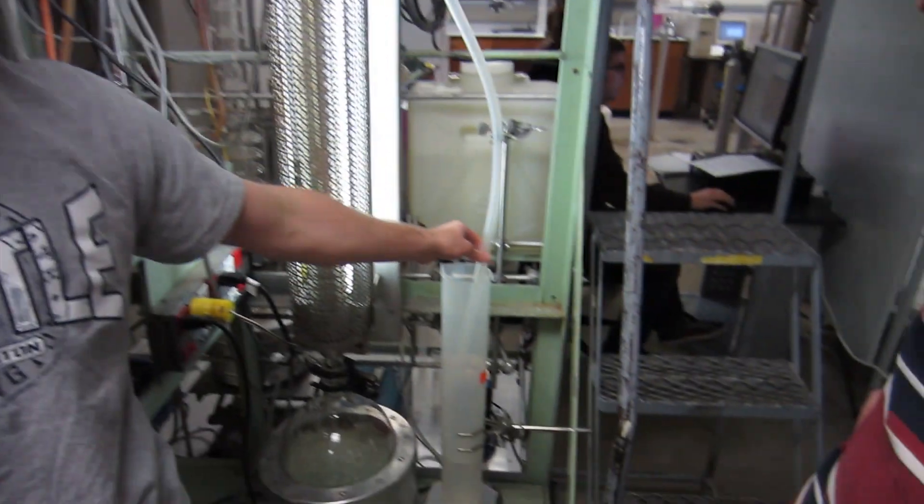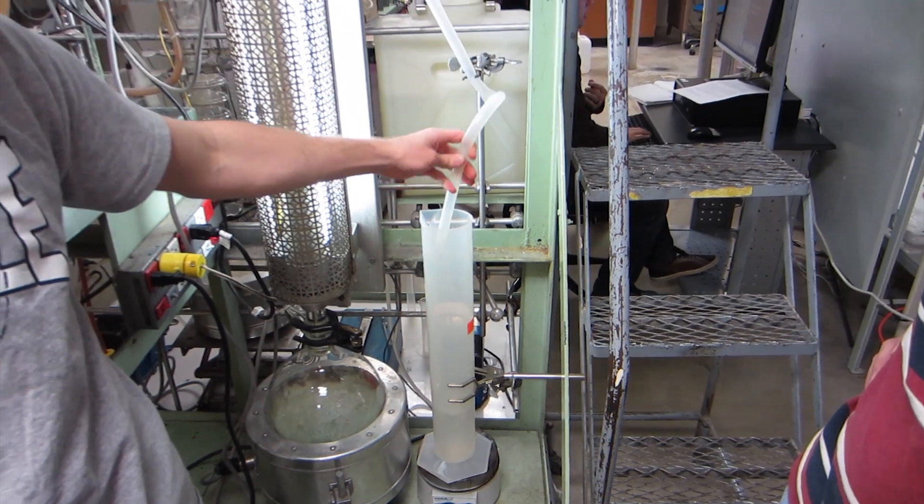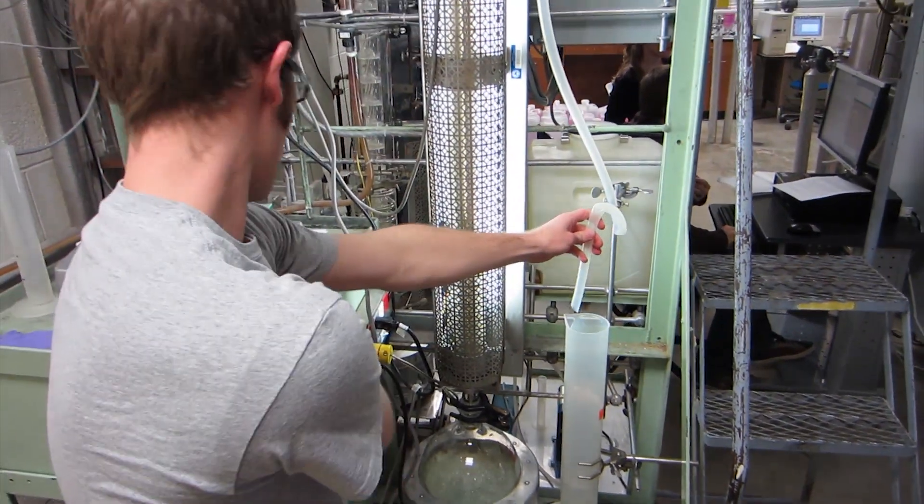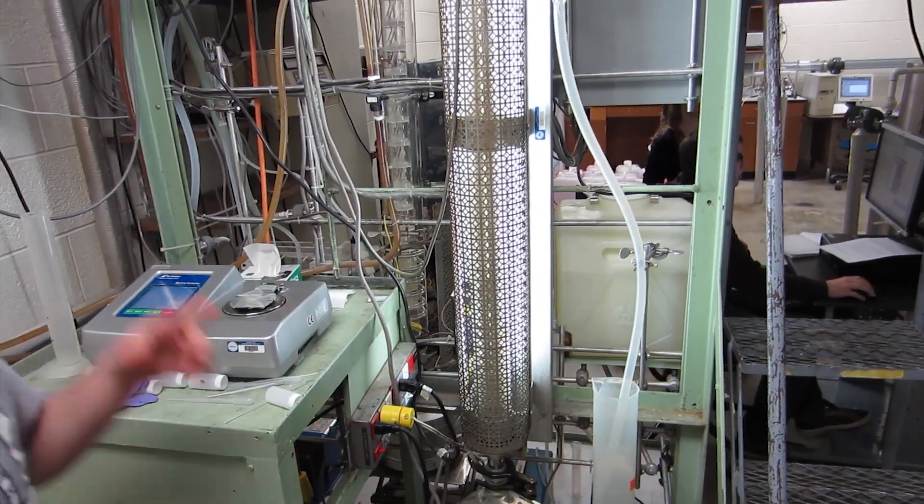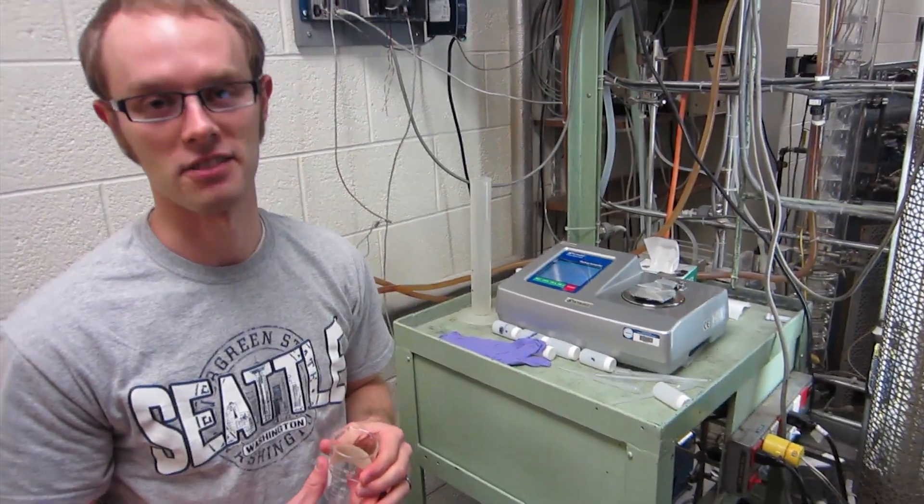The distillate is found right here. It comes out of this tube. You can take that and put a little bit into this beaker, and that's what you use to put in the refractometer.